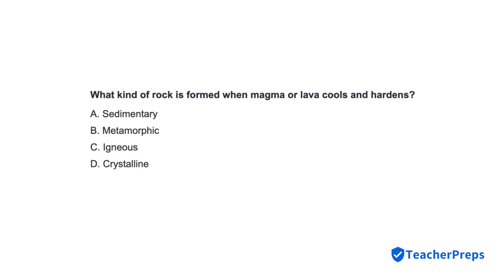What kind of rock is formed when magma or lava cools and hardens? Correct response is letter C: Igneous.